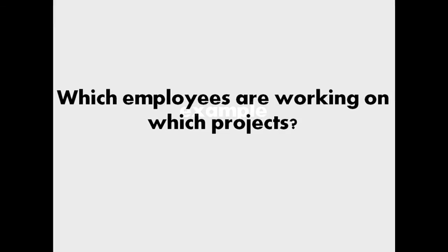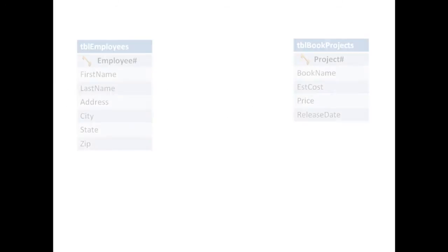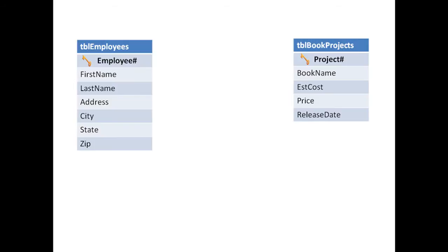For example, if we had a database that stored information about both our employees and current projects in development, and we wanted to know which employees were working on which projects, and we had two tables — a table that stored employee information and another table that stored project information.